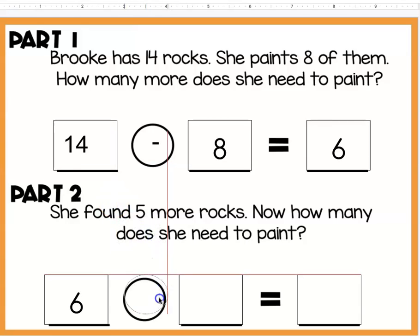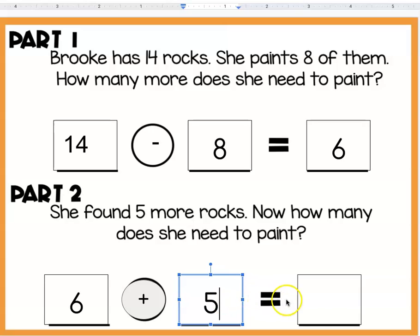But then it says she found five more rocks. So remember, we started with six. She found more, so we're adding, and the number that she found was five. Six and five more, put six in my head: seven, eight, nine, ten, eleven.